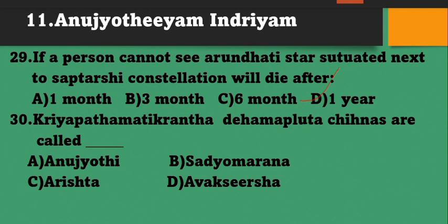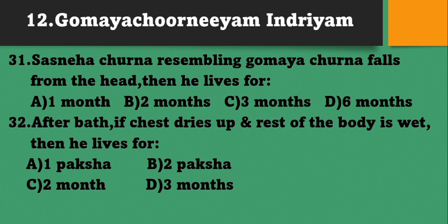Kriyapadamadikranda, Deham, Apludha, Chinnas are called Arishta Lakshanas. Option C. Sasnehachurna resembling Gomeachurna falls from the head - then he lives for 1 month, 2 months, 3 months, or 6 months? He lives for 1 month. Option A. After bath, if the chest dries up fast and the rest of the body is still wet, then he lives for 1 paksha, 2 paksha, 2 masa, or 3 masa? He lives for only 1 paksha. Option A.